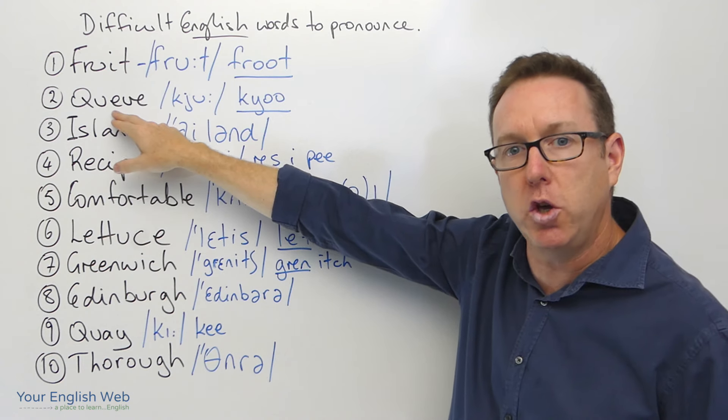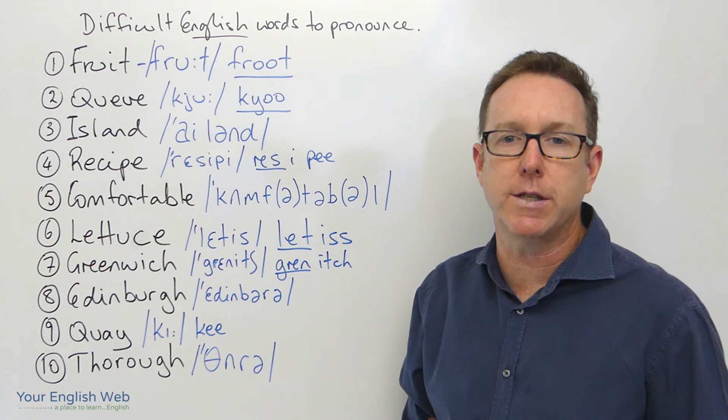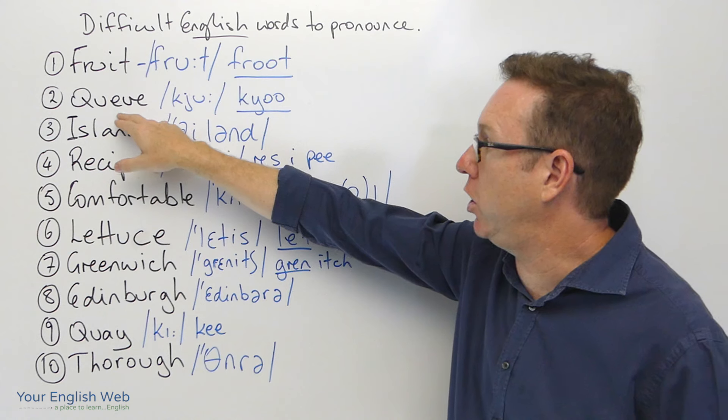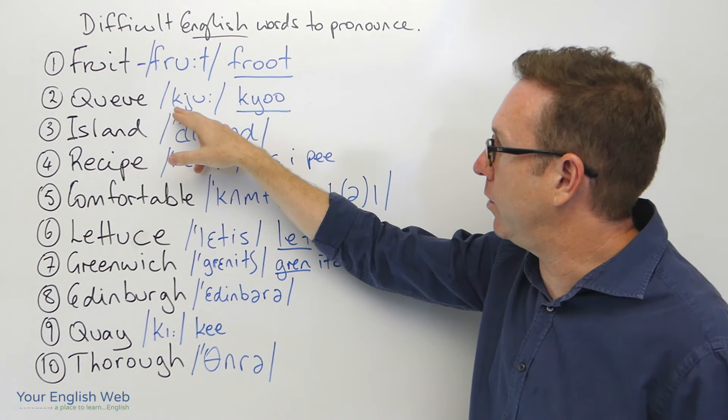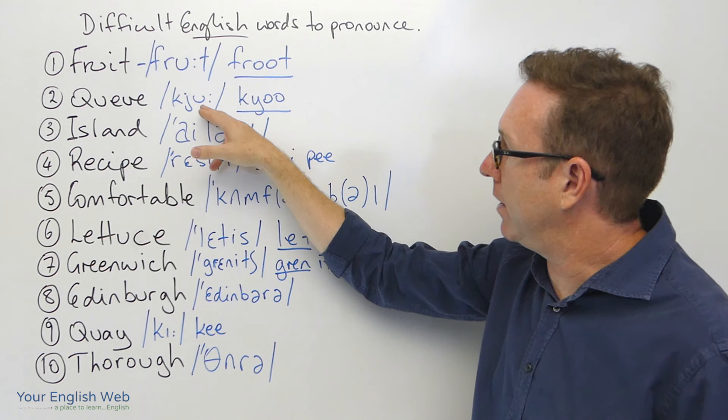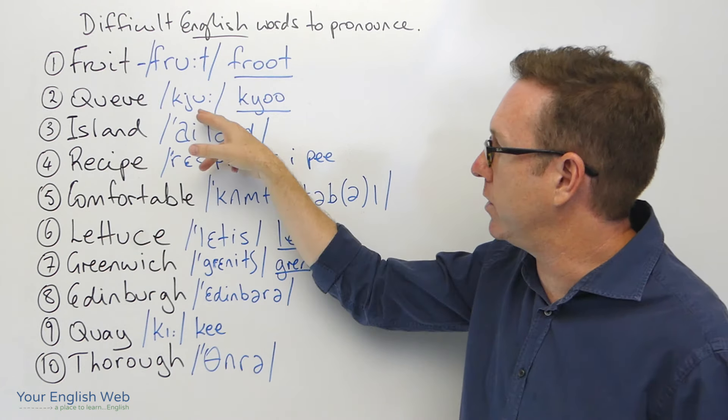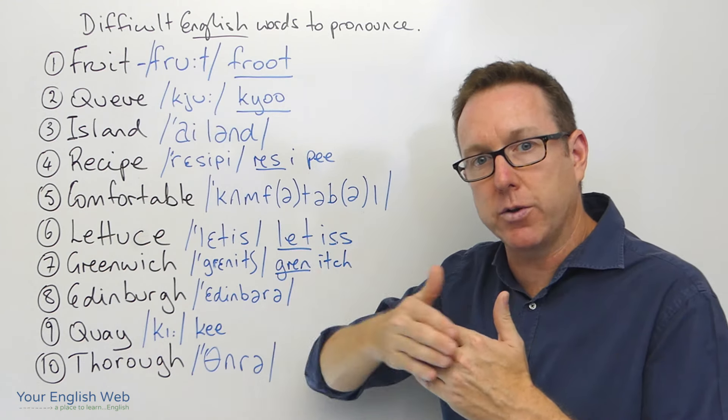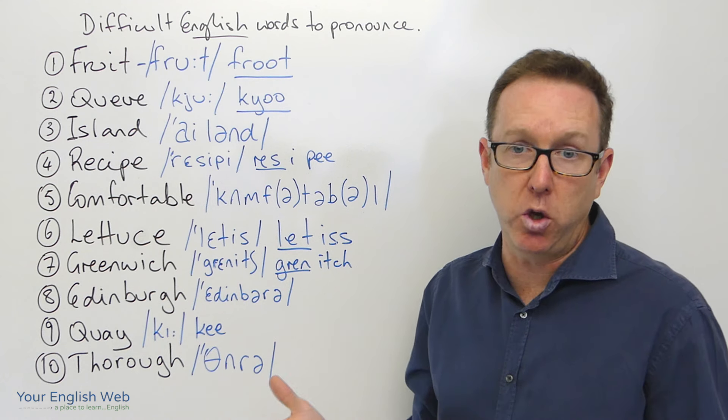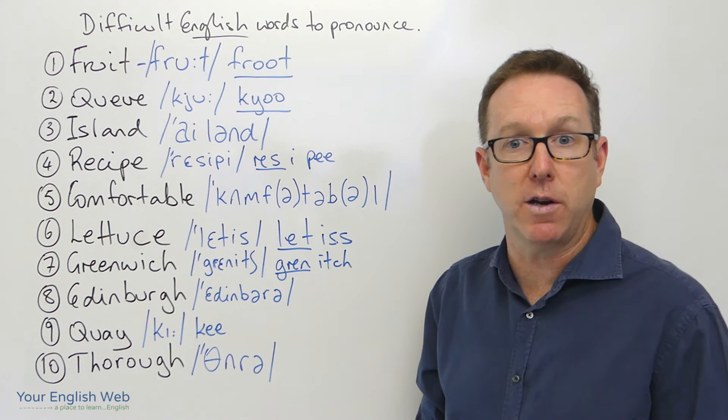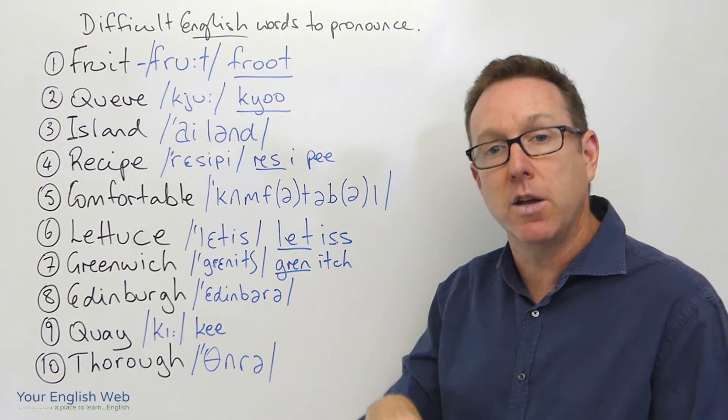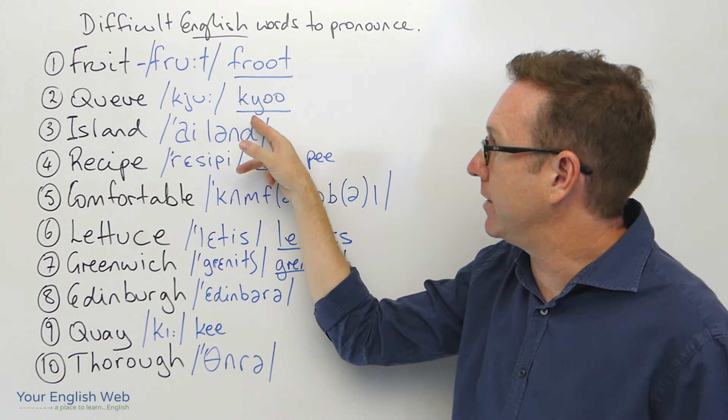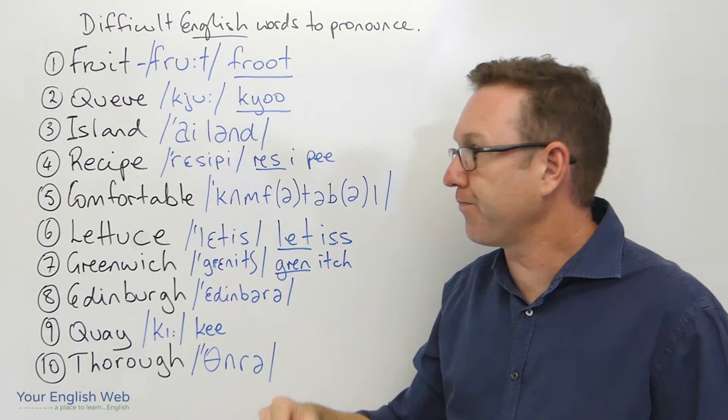The next one is queue, queue. This is a difficult word to spell for even native speakers, but the pronunciation is fairly clear. Queue, queue. We can see here that we have the K and the Q sound, which is represented with this J symbol here, and also the longer vowel sound as well. If you go to a supermarket and there's a lot of people waiting to pay, you're standing in a queue. Here's a more simple pronunciation or spelling of it here. Queue.